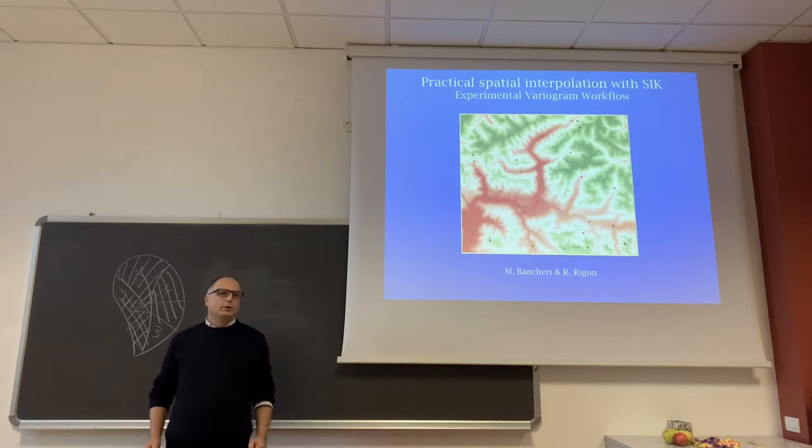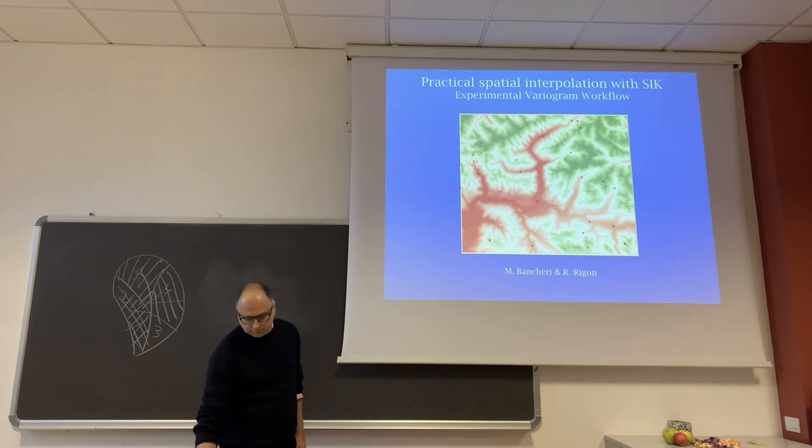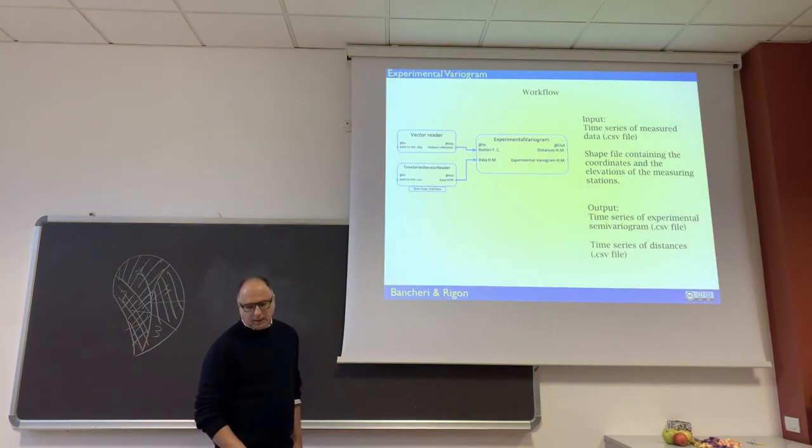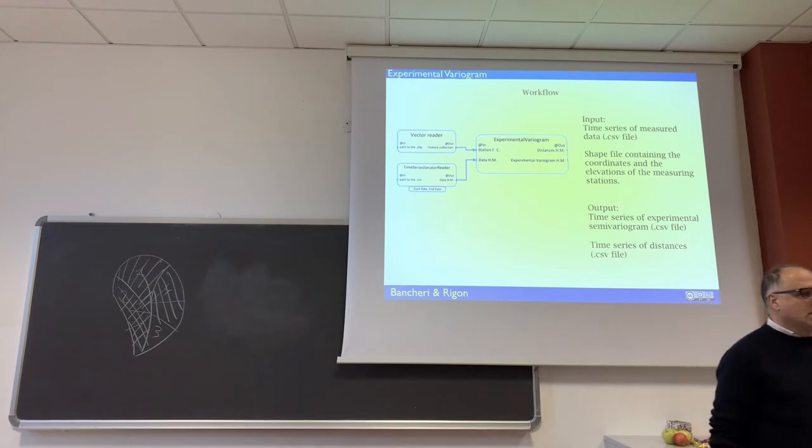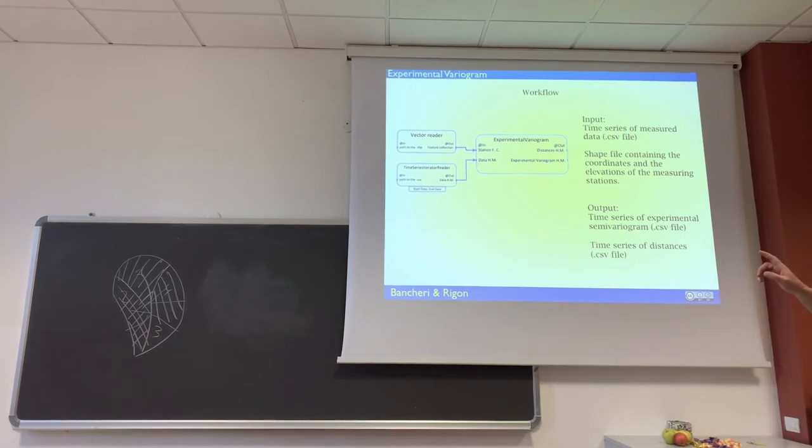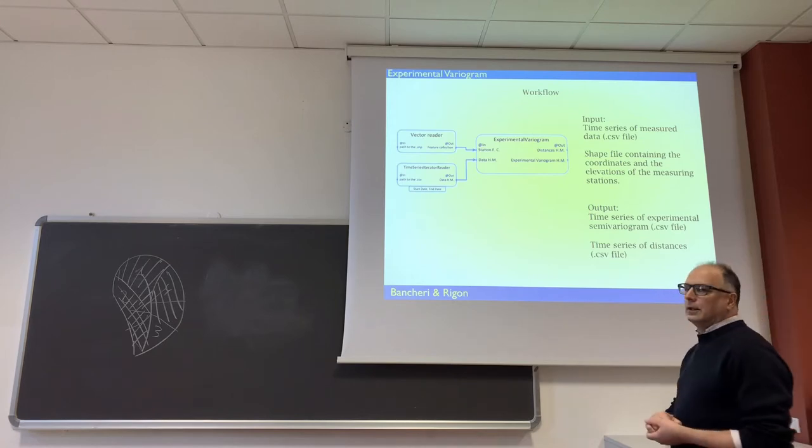Now I am showing you the workflow. The simpler workflow using kriging is this one, where you have a vector reader, a time series iterator reader, which is you have a time series, and we have a feature collection, which is the name for the shape files or raster files that manage the position of your stations.